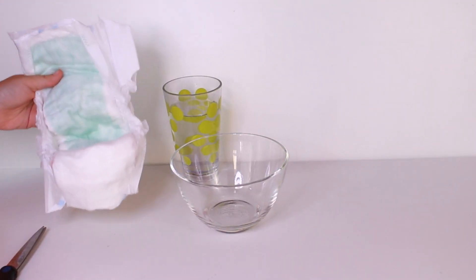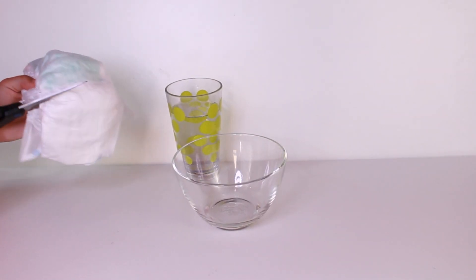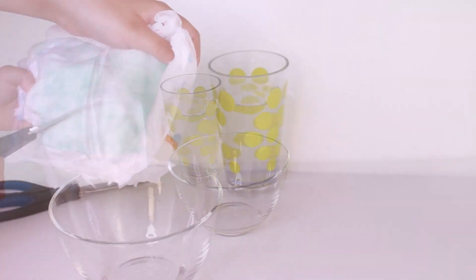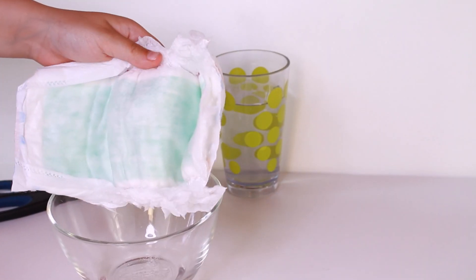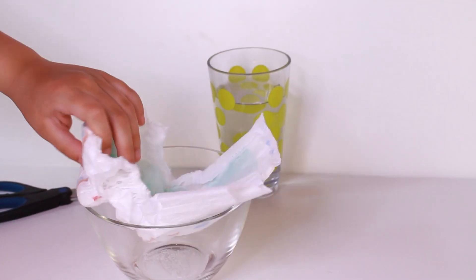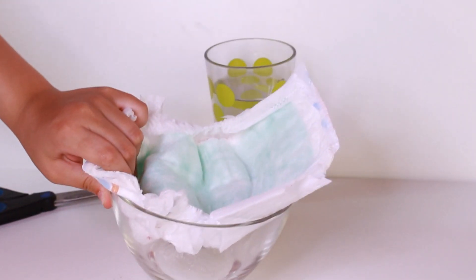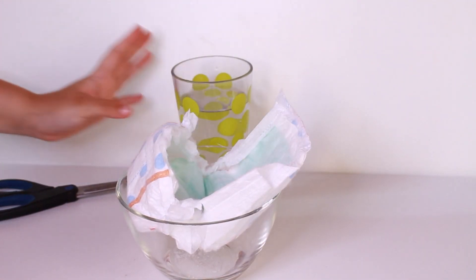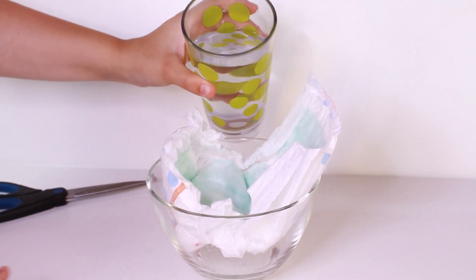You're going to need the jelly of the diaper. This looks like salt but when it comes in contact with water it will become like a jelly. I'm going to put it in a bowl because I don't want to spill the water. Now I'm going to add the water, but be careful.